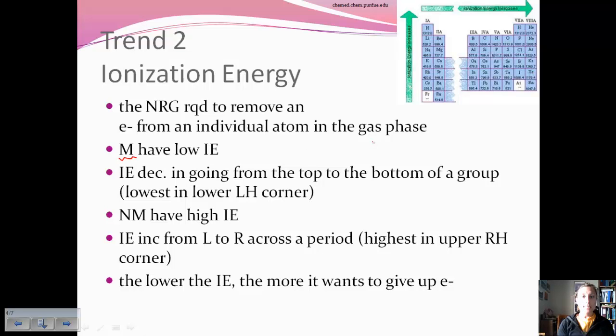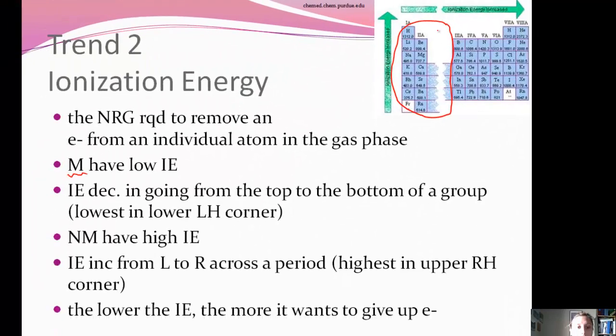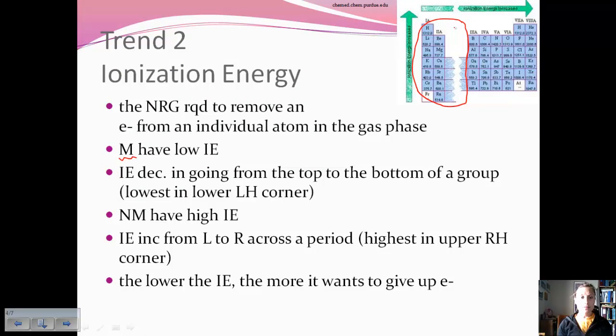Metals will have a low ionization energy. You think about where metals are on the periodic table. They're on the left and in the center. As we go down a group, we know that the atom size gets bigger. Those electrons, those outer electrons, are further away from the nucleus. They're less tightly held. They're going to be very easy to remove.